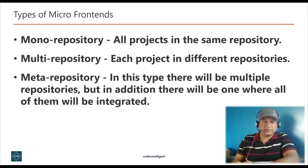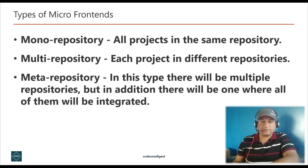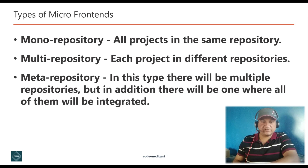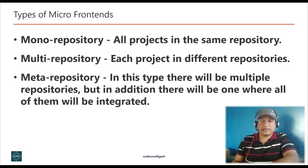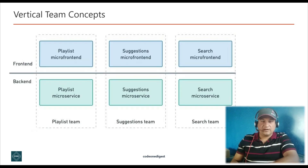The first type is mono repository — all projects are found in the same repository, sharing a single system of dependencies with subfolders for each project. Angular uses this approach, generating sub-applications by default. The second type is multi repository — projects are in different repositories, each with an independent dependency system. The third type is meta repository — there are multiple repositories, plus one repository where all of them are integrated.